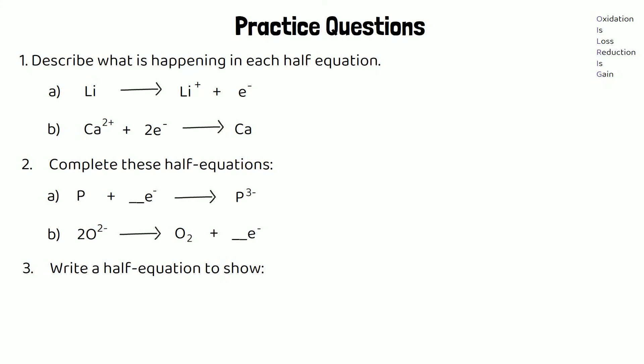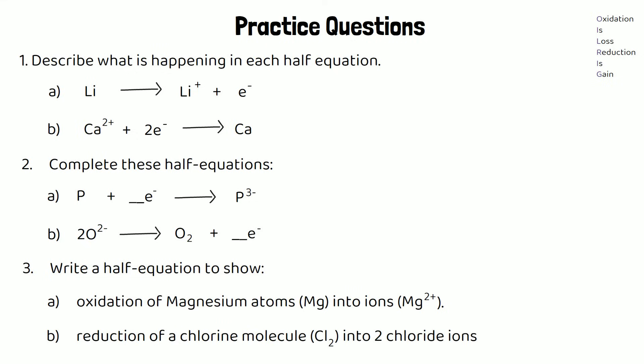Part 3 is to just write a half equation completely from scratch to show, firstly, the oxidation of magnesium atoms into ions, so Mg turning into Mg2+. And part B, reduction of a chlorine molecule, which is Cl2, that's two atoms, into two chloride ions. Pause the video and give these questions a go.